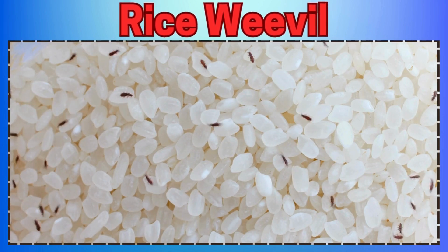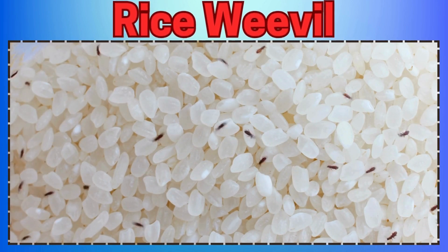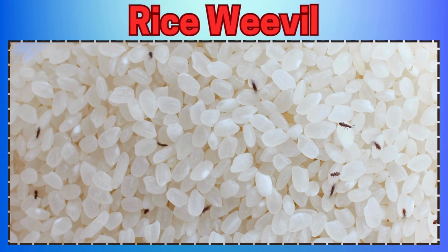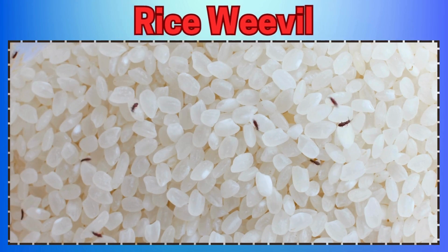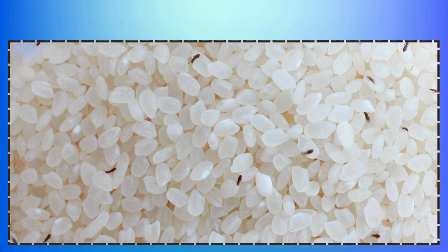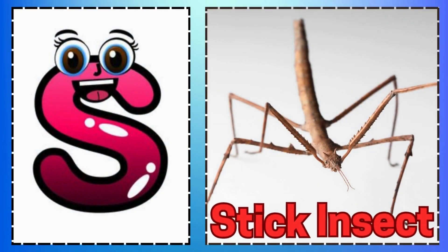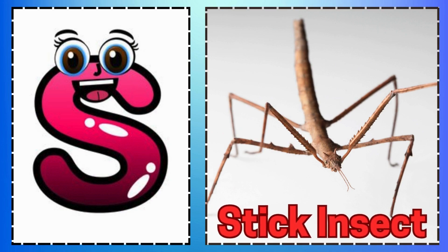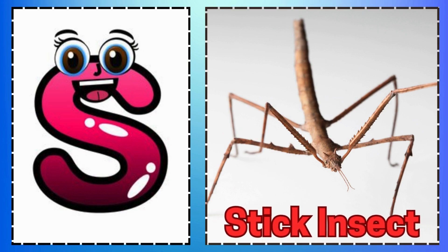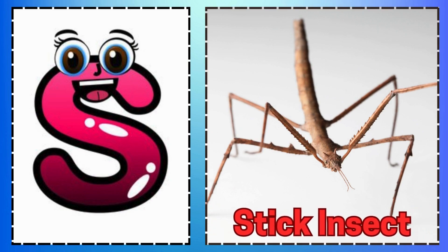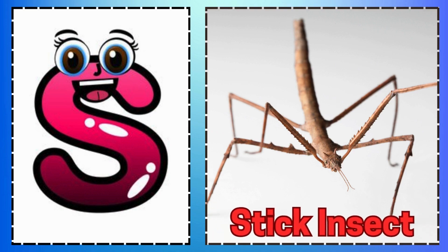A is for Ants so Tiny and Strong. B is for Butterfly Fluttering Along. C is for Caterpillar. D is for Dragonfly Zooming. S is for Stick Insect.